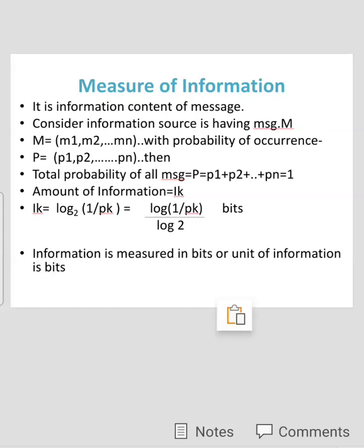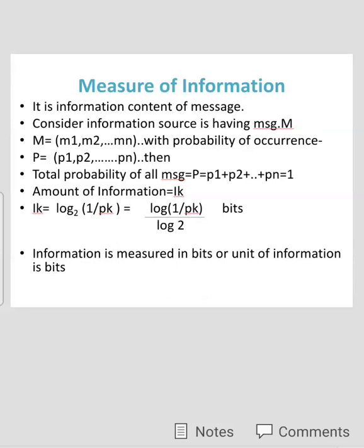The amount of information I(k) can be calculated using the mathematical equation: I(k) = log base 2 of (1/p(k)), where p(k) is the probability of that respective message. This can also be represented as log(1/pk) divided by log(2). In this way we can measure the information contained in a message.